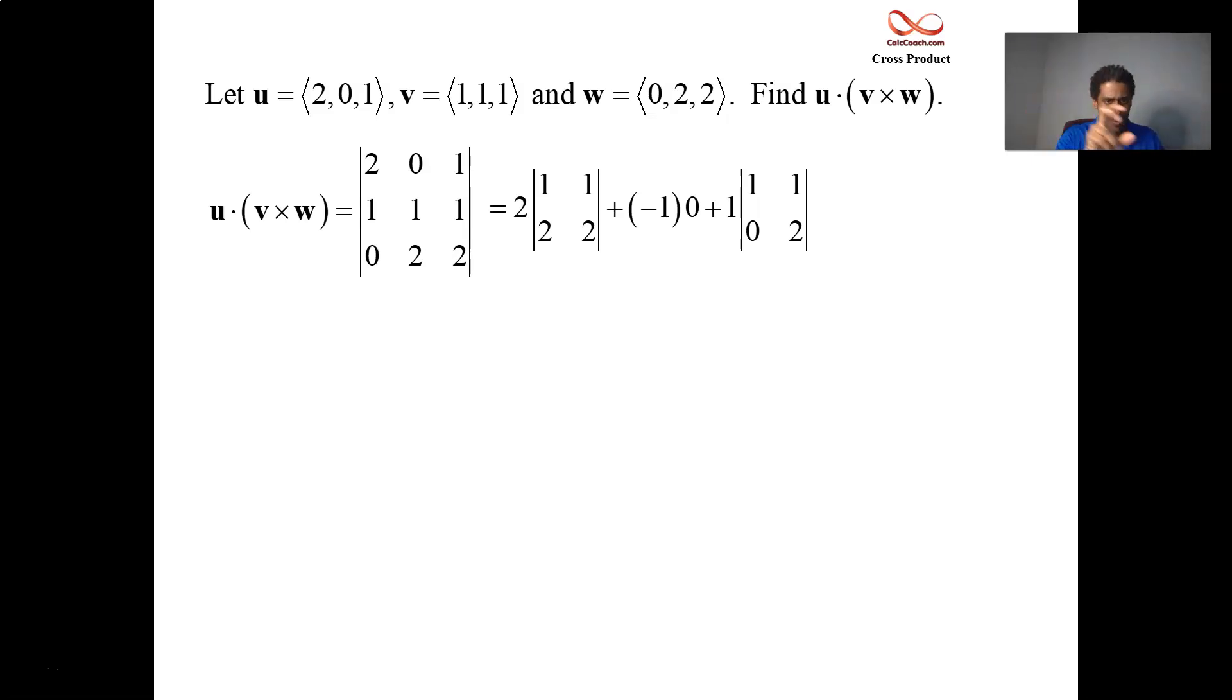And we take one times the two by two determinant, one, one, zero, two. By crossing out the row and column of that entry, we get the two by two determinant that we have to find.